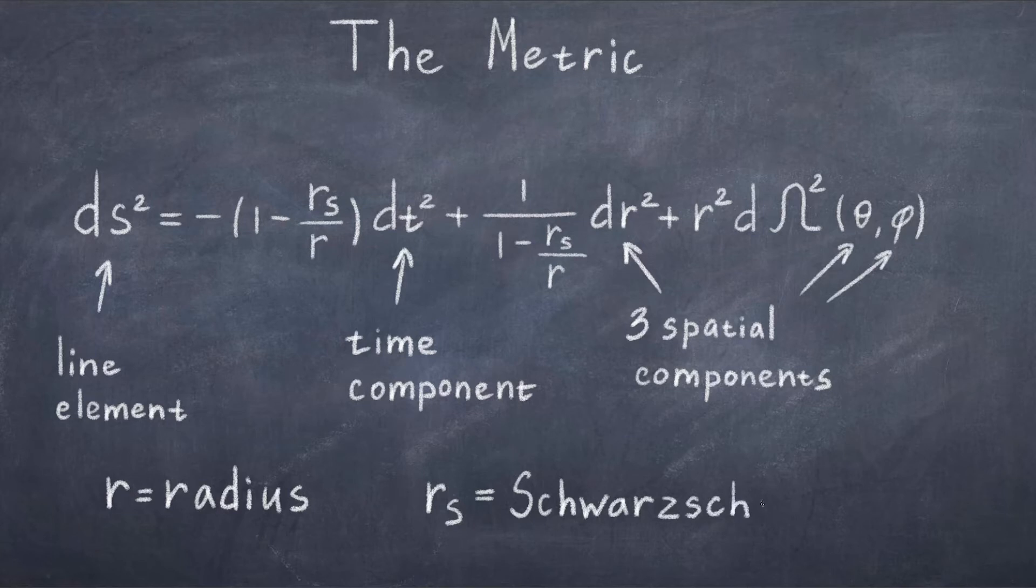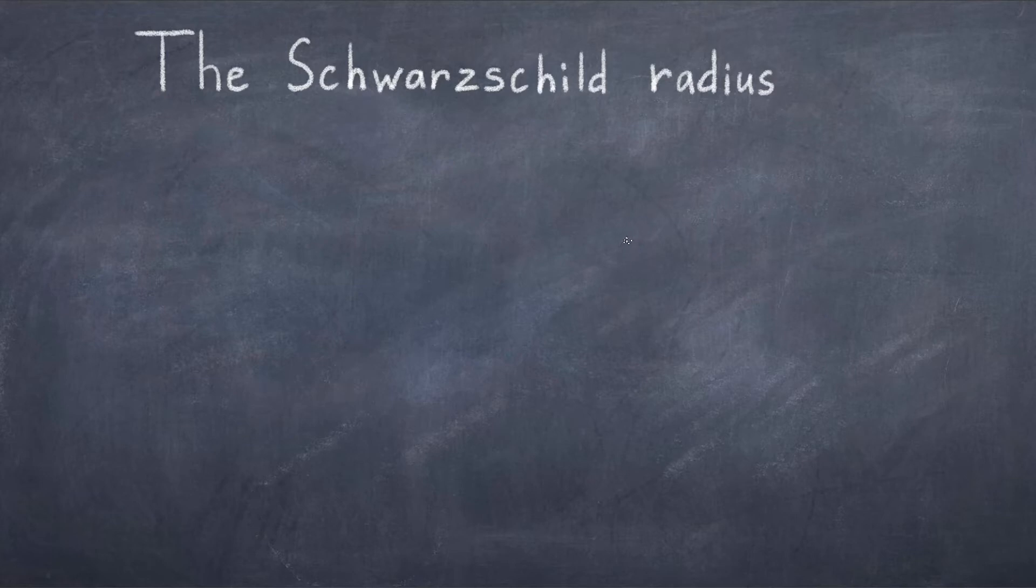The other value is rs, also known as the Schwarzschild radius. The Schwarzschild radius turns out to be a very interesting object. It is defined as rs equals 2 times G times m, where G is the gravitational constant and m is the mass of the object.